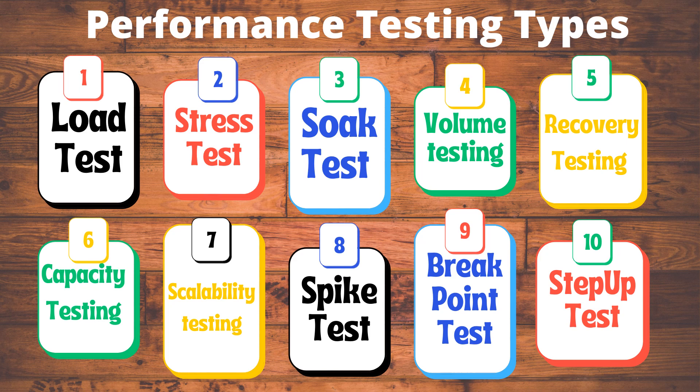The third type is soak test or endurance test — an evaluation of how software performs with a normal workload over an extended amount of time. The goal of endurance testing is to check for system problems such as memory leaks. The fourth type is volume testing, which determines how efficiently software performs with large projected amounts of data. It is also known as flood testing because the test floods the system with data.